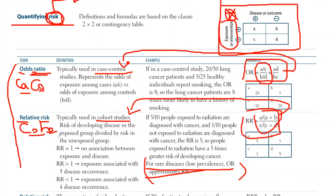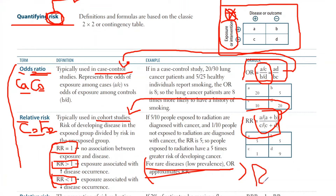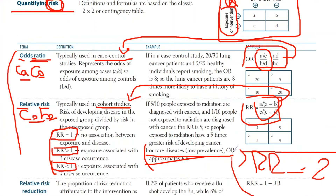The last point about relative risk is really important: if relative risk is greater than one, the exposure is associated with increased disease occurrence. If relative risk is less than one, the exposure decreases the chance of developing the disease. If it equals one, the exposure does not increase or decrease your risk. These interpretations are important because a question might say 'the relative risk equals two' and ask you to explain what that means.